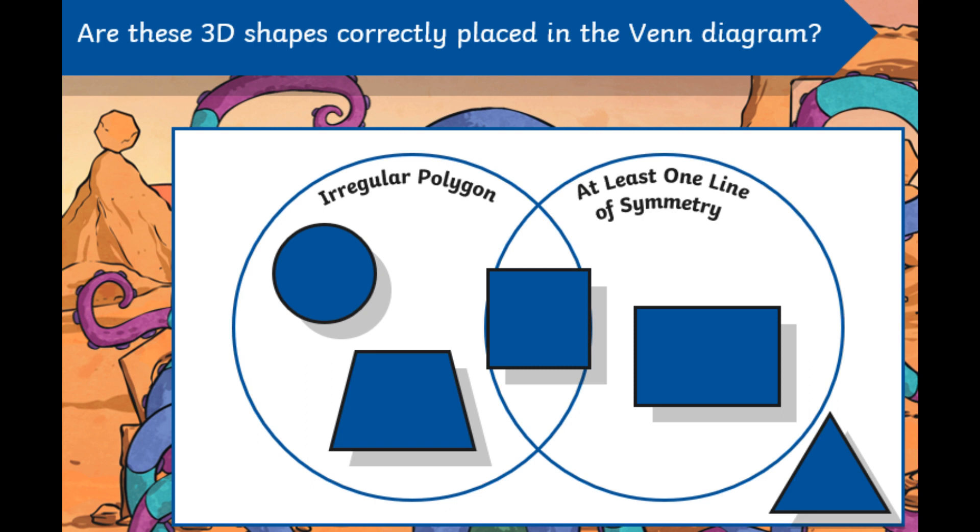And then at the moment, the triangle is outside the diagram, which means by this example, it's not irregular polygon, nor does it have at least one line of symmetry. So have a look. You might want to again draw this out yourself. Are those shapes in the right place? If not, what will the diagram look like once you have corrected it? And again, have that discussion. Why do they need to move? Think about the properties of those shapes. Pause the video as before and let's have a look at what it should look like.